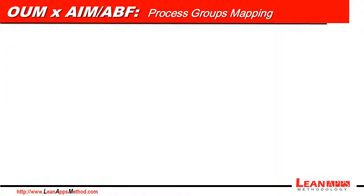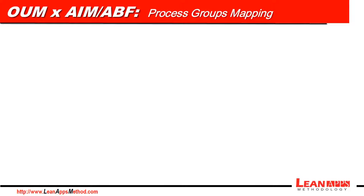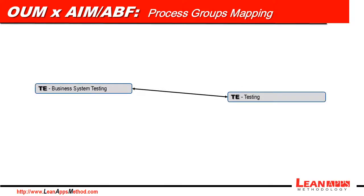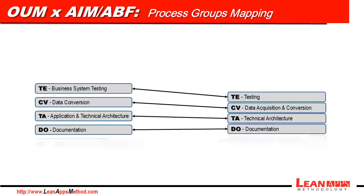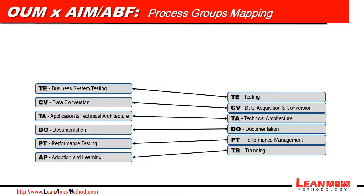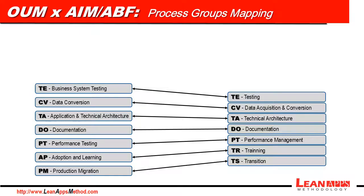In this slide, we can see all the process mapping between AIM and OUM. System testing is basically a one-to-one relationship, as well as Data Conversion, Application Technical Architecture, Documentation, Performance Testing, and Adoption and Learning with Training — these are basically the same, with differences only in names. But Production Migration is now split into two different processes: Transition, which moves the system to go live, and Operations and Support, which mainly supports the system after go live.